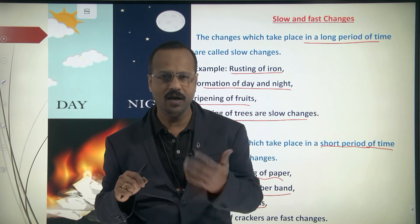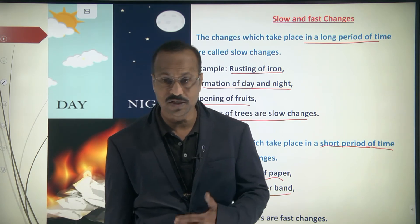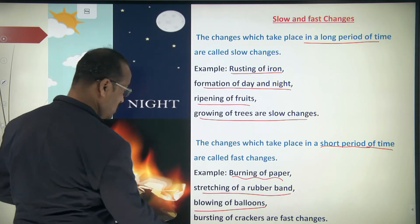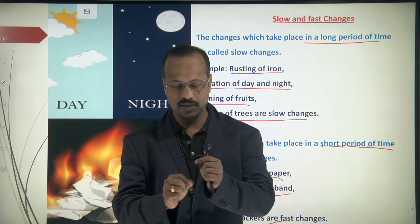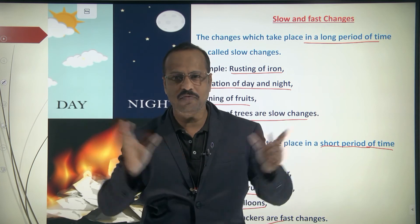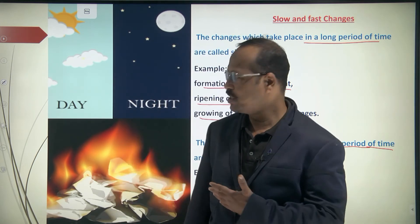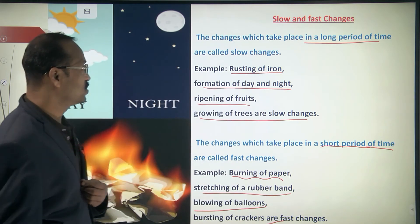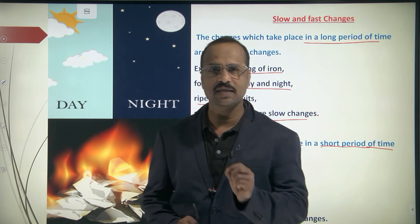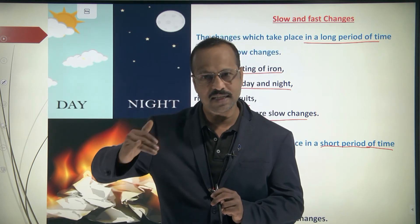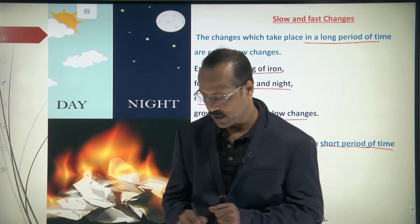Blowing a balloon takes a few seconds to a couple of minutes — still considered a fast change. Bursting of crackers, like a bomb cracker: you light it and within a fraction of a second it explodes. So fast changes are those occurring within seconds or minutes, while slow changes take hours, days, months, or years.